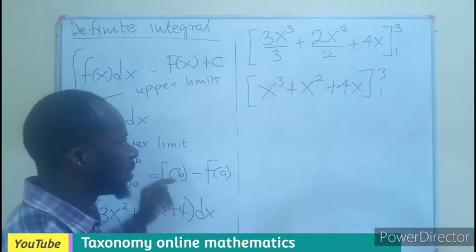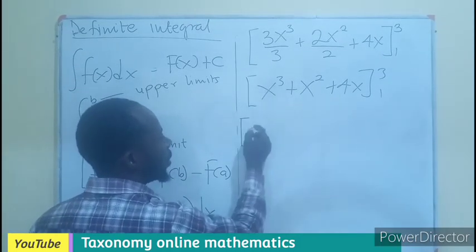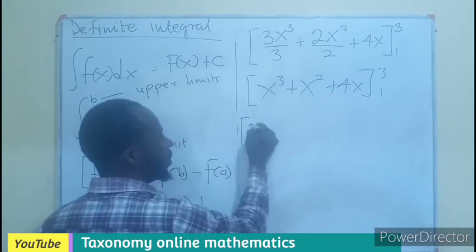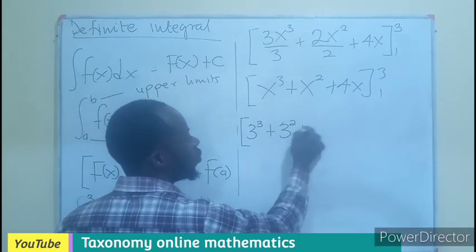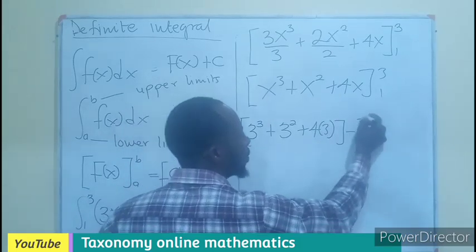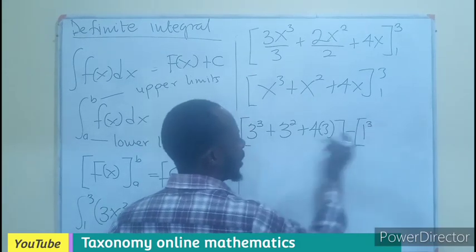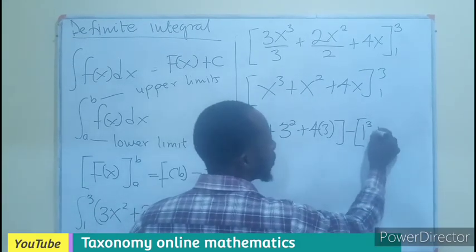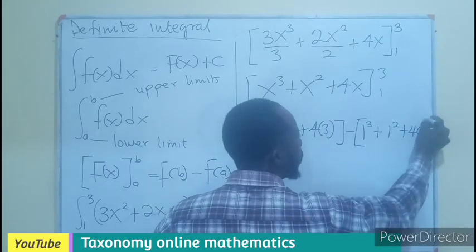Let's infuse the upper limit in place of x. So, that will become 3. We will replace here. So, 3³ plus 3² plus 4 times 3 minus. We will replace this with 1³, which will still be 1, 1², 4 times 1.